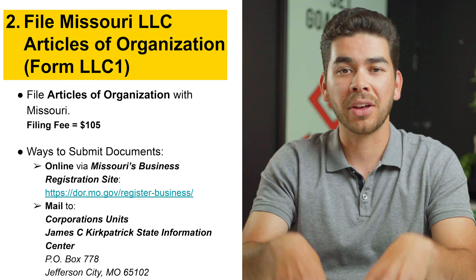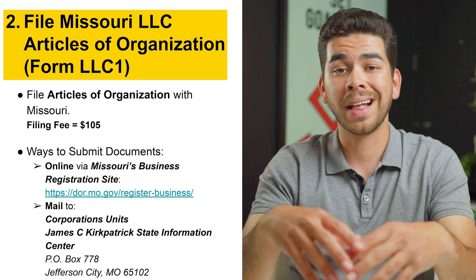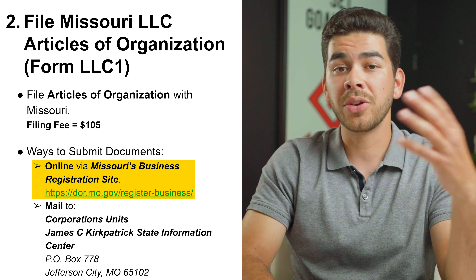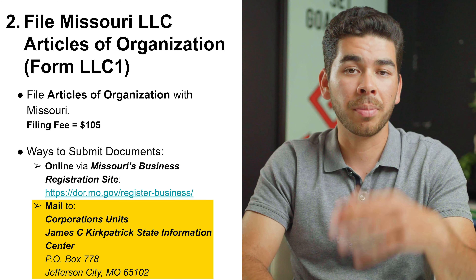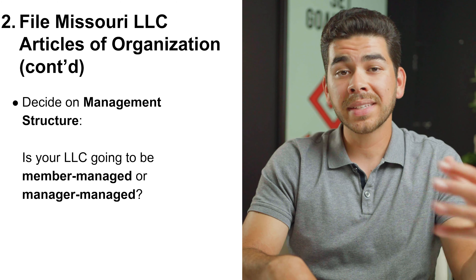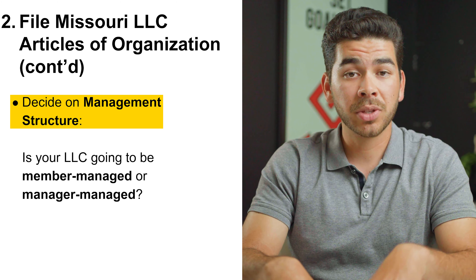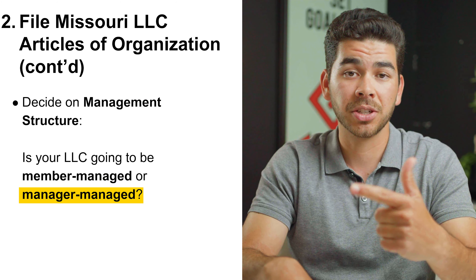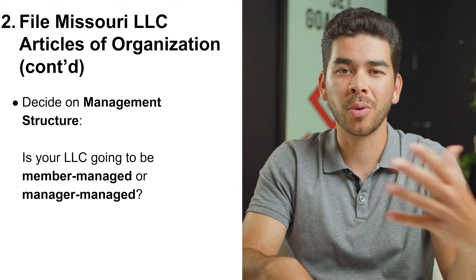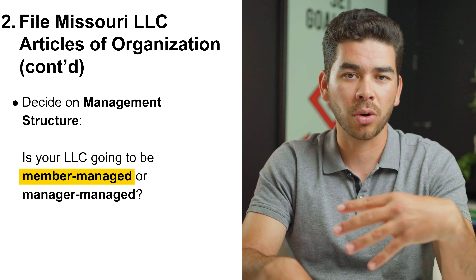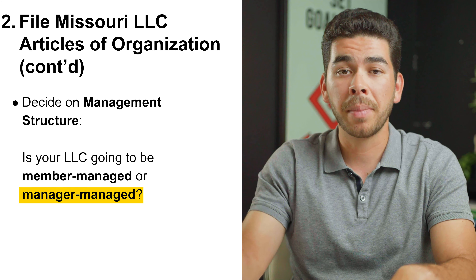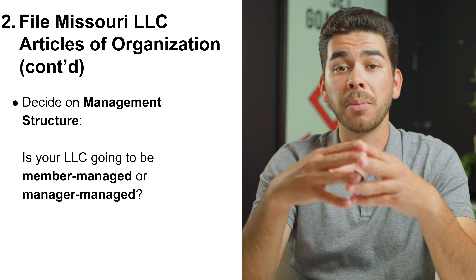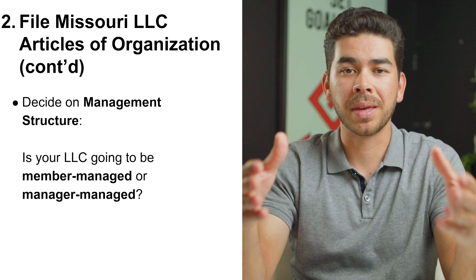Step number two is to file your articles of organization in the state of Missouri — this is form LLC-1. The filing fee is $105, and you can submit it online or by mail; we recommend doing it online. You also need to decide on a management structure. There are two types: member managed and manager managed. For most people watching, you'll be member managed, meaning you manage your own LLC. Manager managed means you hire someone to manage it.